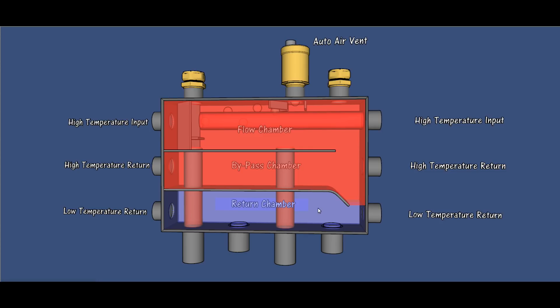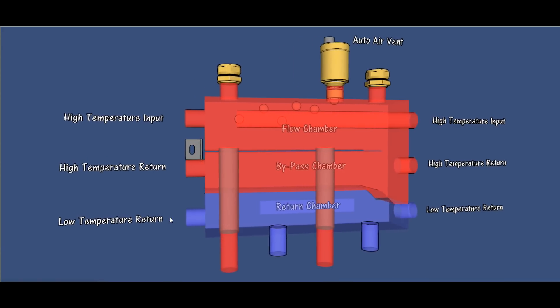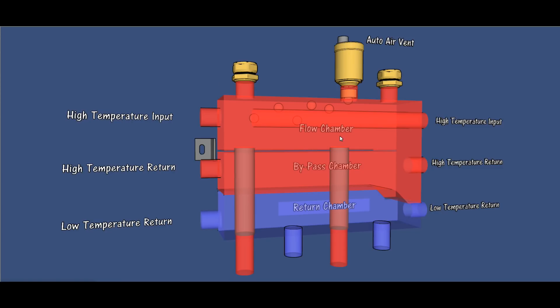It allows each of those to be used for their respective duties. For example, the hottest water would feed zones. The return water, the coolest water, would feed the boilers that needed the coolest return water.